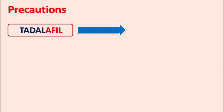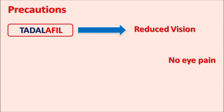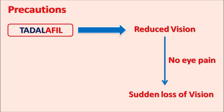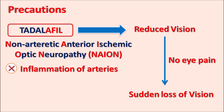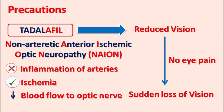Similarly, Tadalafil can reduce vision in patients. Sometimes without any eye pain, this drug may produce sudden loss of vision. This condition may be associated with Tadalafil treatment, and particularly this sudden loss of vision is because of neuropathy produced by Tadalafil. This drug can produce a condition called non-arteritic anterior ischemic optic neuropathy — where there is no inflammation in the arteries, but ischemia decreases blood flow to the optic nerve, resulting in damage to the optic nerve and finally sudden loss of vision. Care should be taken to check vision, and in case of any symptoms of decreased vision, this drug should be stopped.